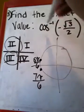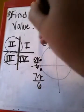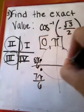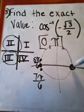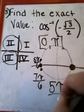Now we have a domain of 0 through pi, so the angle can only be from 0 to pi. Our final answer is 5 pi over 6.